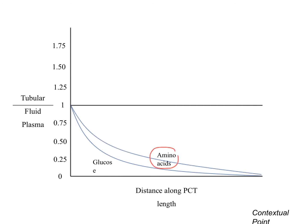Amino acids. As we know, we are reabsorbing amino acids along the proximal convoluted tubule. This should make sense too — the amino acids start at one and are reabsorbed through the proximal convoluted tubule, going to zero or near zero.